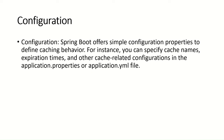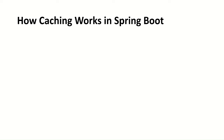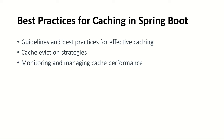The third way of implementing cache in Spring Boot is through configuration. Spring Boot offers simple configuration properties to define caching behavior — for instance, specifying cache names, expiration times, or other cache-related configuration in the application.properties or application.yml file. We will also discuss best practices for caching like cache eviction strategies, and monitoring and managing cache performance practically.